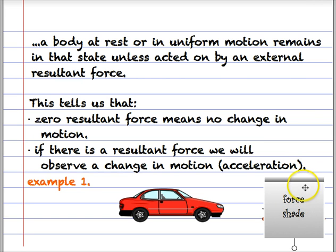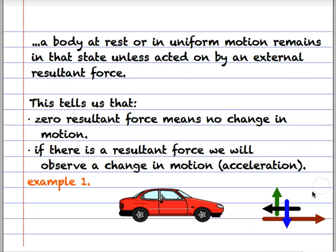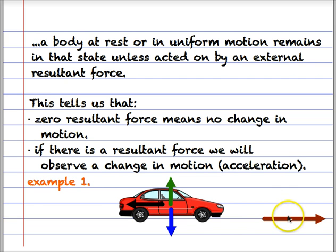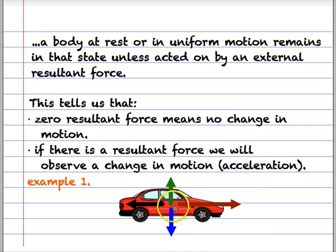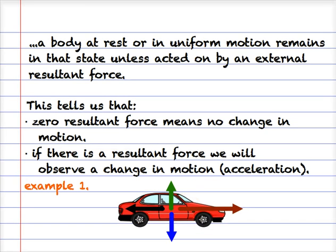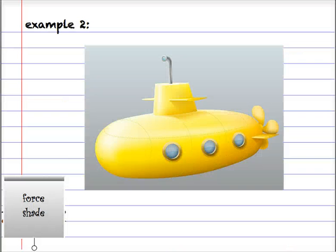Here's an example: a car with weight, reaction force, drag, and thrust. We can see it has a resultant force to the right because the vertical arrows cancel, and the horizontal arrow to the right is longer than the one to the left. This means the car will not remain at rest and will not remain in uniform motion — it will accelerate.